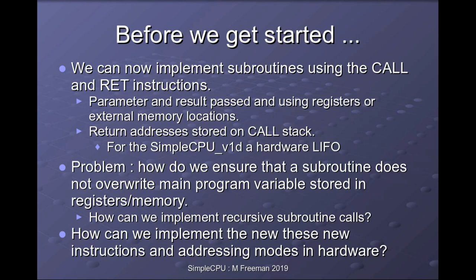But this raises a problem: we now have the capability of implementing subroutines, but this exposes possible problems with overwriting variables stored in memory. If a subroutine calls another subroutine and they both want to use the same registers, they'll obviously corrupt each other's states. Equally, if you want to do recursion — where a subroutine calls itself multiple times — how do you preserve the state at each level of recursion? We also looked at different addressing modes and instruction formats in the last lecture.